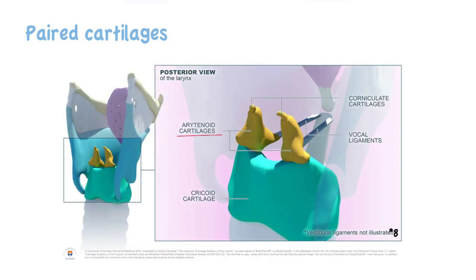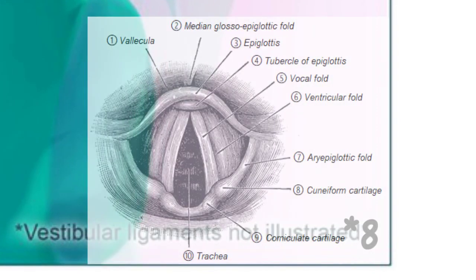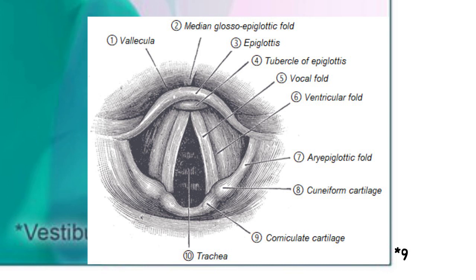The paired cartilages are the arytenoid cartilages, which provide attachment to the vocal folds and control their movement; the corniculate cartilages, which are minor structures that articulate together with the arytenoid cartilages; and the cuneiform cartilages, which act to strengthen the aryepiglottic folds. In the superior view of the larynx, the cuneiform cartilages may be visualized.